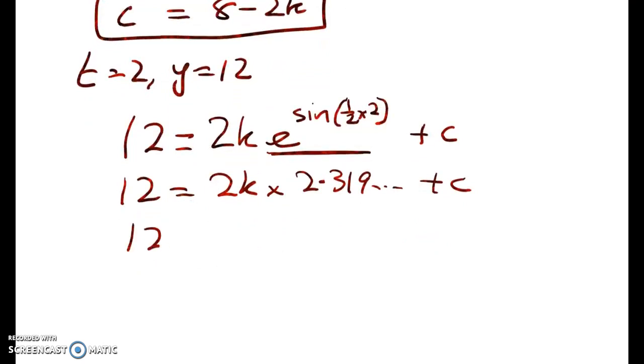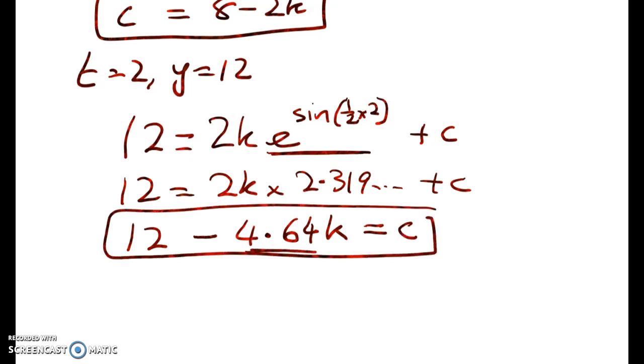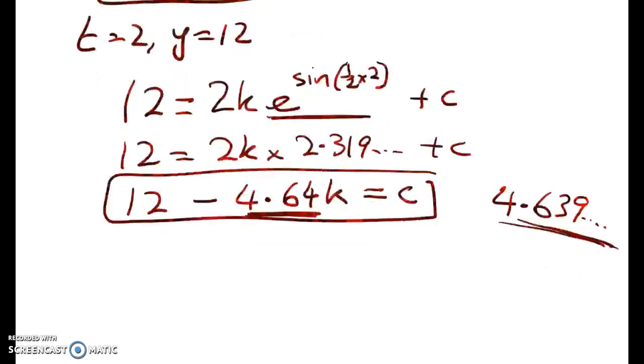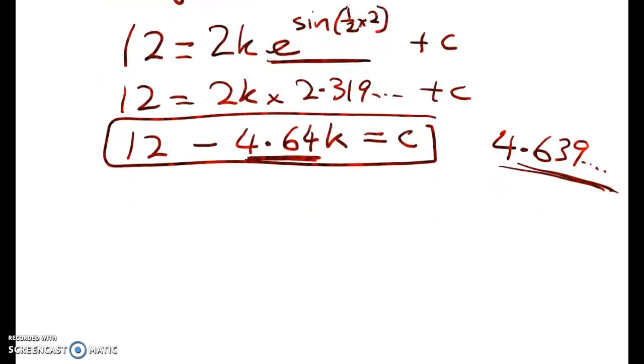So that gives me 12 minus 4.64k is equal to c. Now I'm writing that like that here, but I wouldn't round too hard, so I would put over here in my notes 4.63, I think it was 4.639 or something. So put the whole number down somewhere, just so that you can check you haven't stuffed up the rounding.